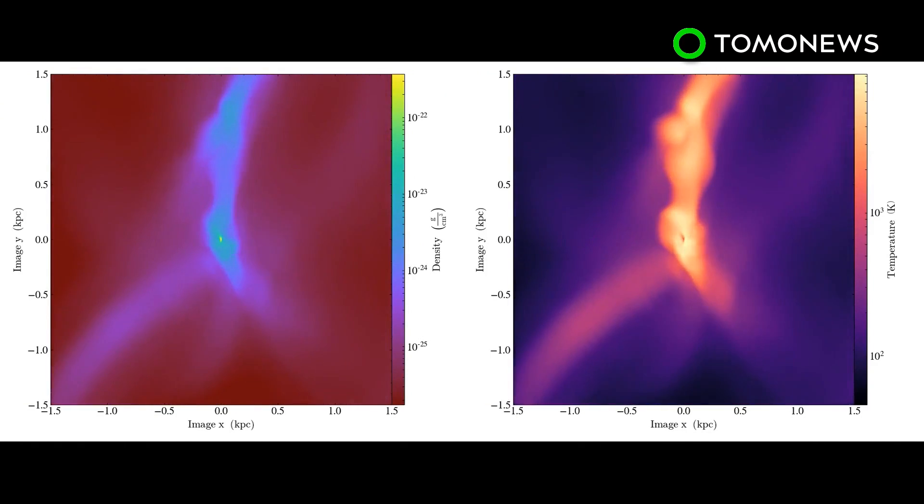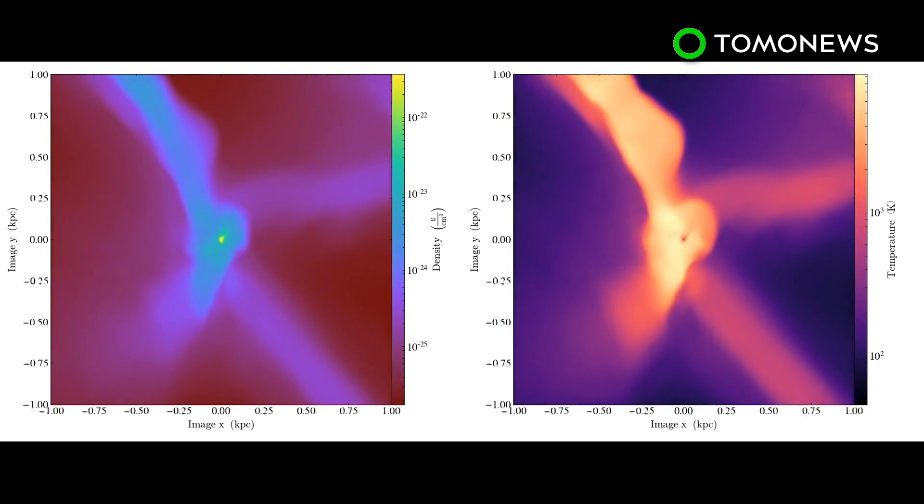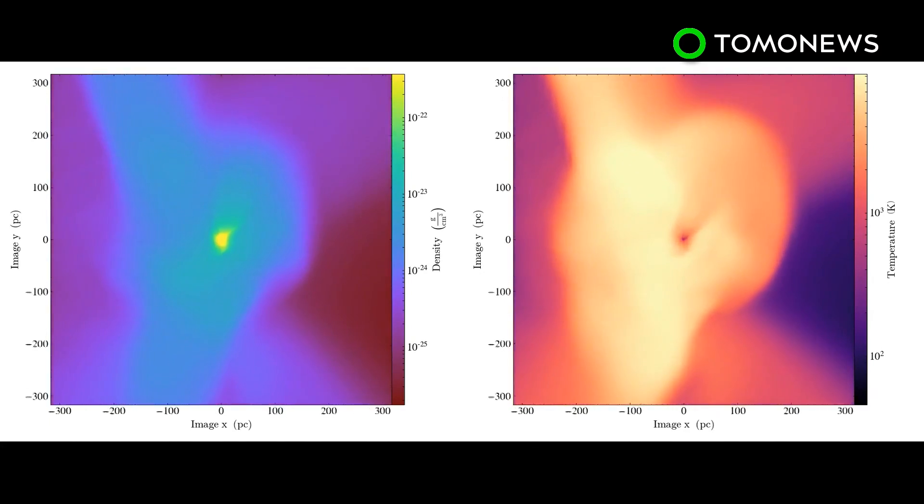This means that as this simulated galaxy formed quickly, star formation was disrupted, leaving behind a dense gas cloud and allowing massive black hole formation to take over.